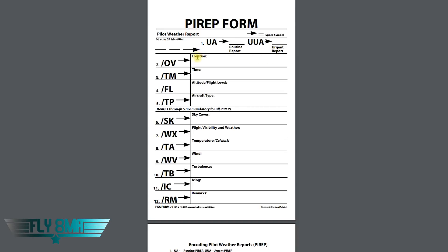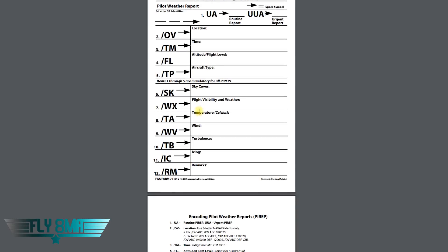Things like that would be very urgent. Then there's the location, the time, the altitude or flight level, and the aircraft type — whether it's a Cessna 172 or a Boeing 747. If a Boeing 747 reports light turbulence, that's very pertinent because if you were to fly the same light turbulence they reported at 5,000 feet in your 172, that's probably going to be moderate or severe for you. So the type of aircraft reporting is very important. Items one through five are mandatory, but the rest depend on what the weather is doing — sky conditions, weather type, temperature, wind, turbulence, icing, remarks.